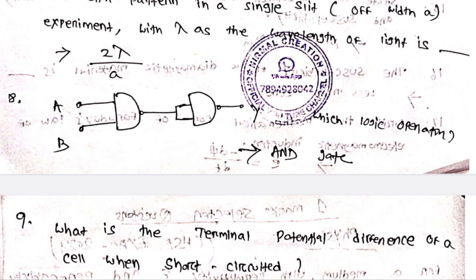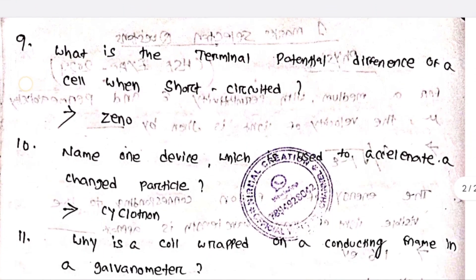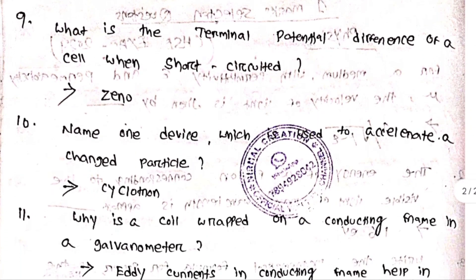If you have a logic gate — AND, NOR, XNOR, OR — you have to identify the diagram of the logic gate, which logic operation it represents, and write it accordingly. What is the terminal potential difference of a cell when short-circuited? The terminal potential difference when short-circuited is 0.